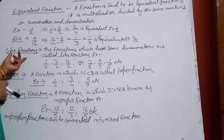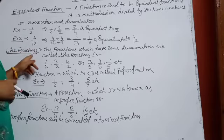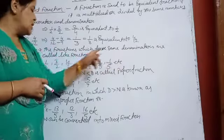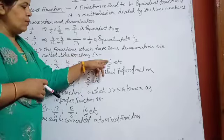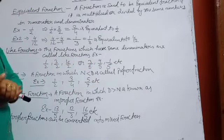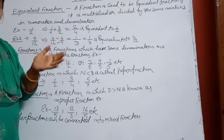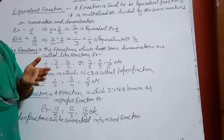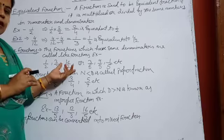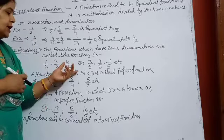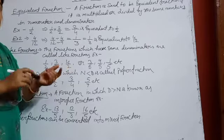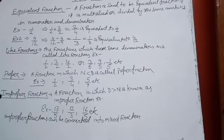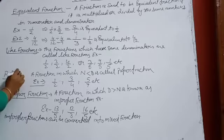Next definition is like fractions. Fractions which have the same denominators are called like fractions. For example, 1 upon 2, 3 upon 2, 4 upon 2, or 3 upon 5, 4 upon 5, 1 upon 5. If we have like fractions, we don't need to take any LCM — we can directly add or subtract them. But if denominators are unequal, we take LCM first.